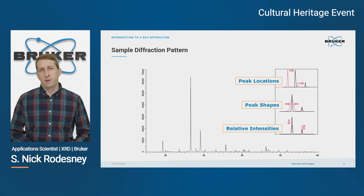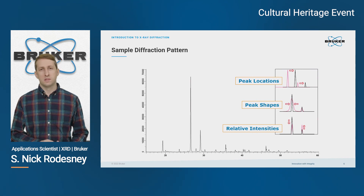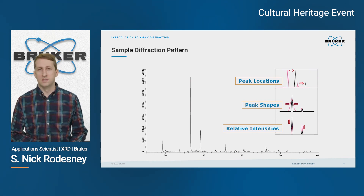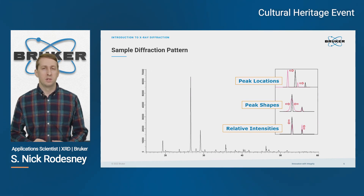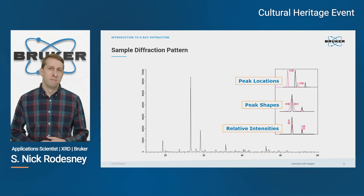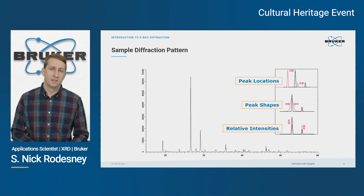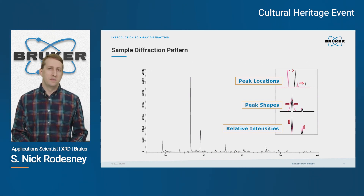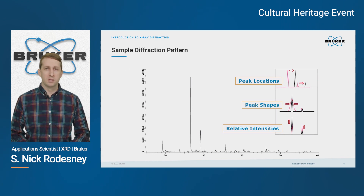When we look at a diffraction pattern like this, there are three things that we're interested in: the peak locations, the peak shapes, and the relative intensities. The peak locations will give us information about the phase composition of our material. The peak shapes will tell us about the crystallite size, and the relative intensities will help us with quantification if we have a mixture.